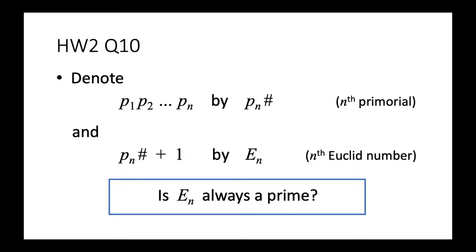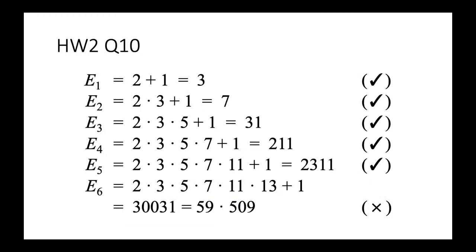So E6 is a counterexample to the statement that E_n is always prime. As for the current status of the problem, nobody knows whether there are infinitely many non-prime Euclid numbers — this remains an open problem. That is all for today's tutorial.